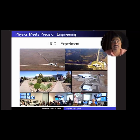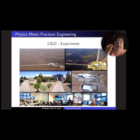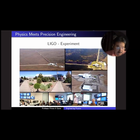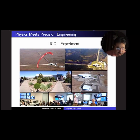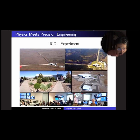This is called the LIGO experiment — an observatory used to detect gravitational waves. This experiment is not possible without the precision engineering available to us, both in how we handle the data and the experiment itself. In this experiment there are two setups: one in Hanford, Washington, and the other in Livingston, Louisiana. In LIGO, there are two tubes around four kilometers long in an L-shape, and they are vacuumized.